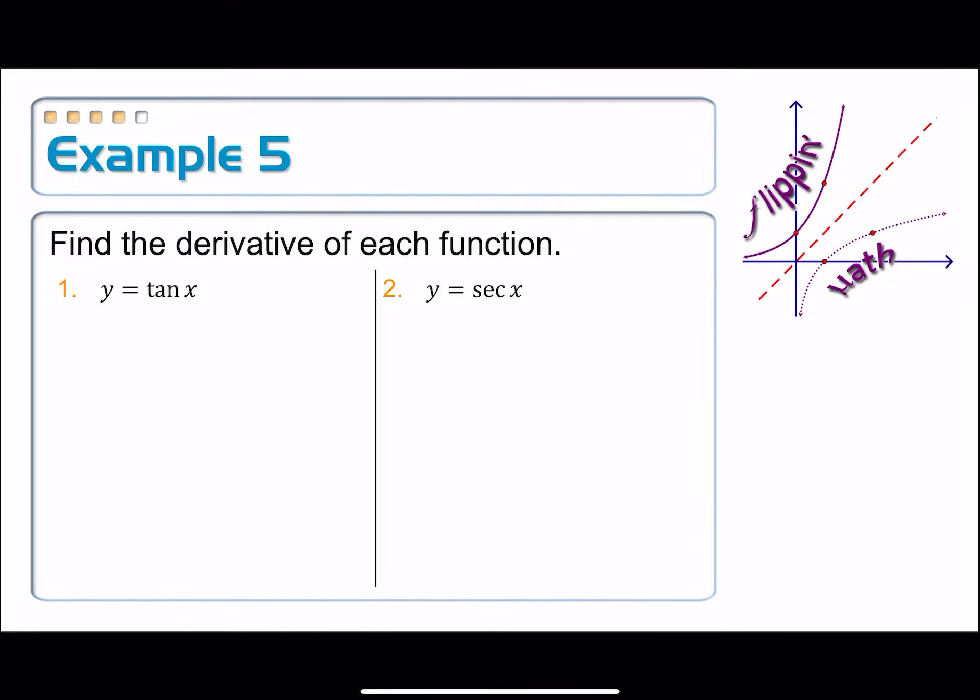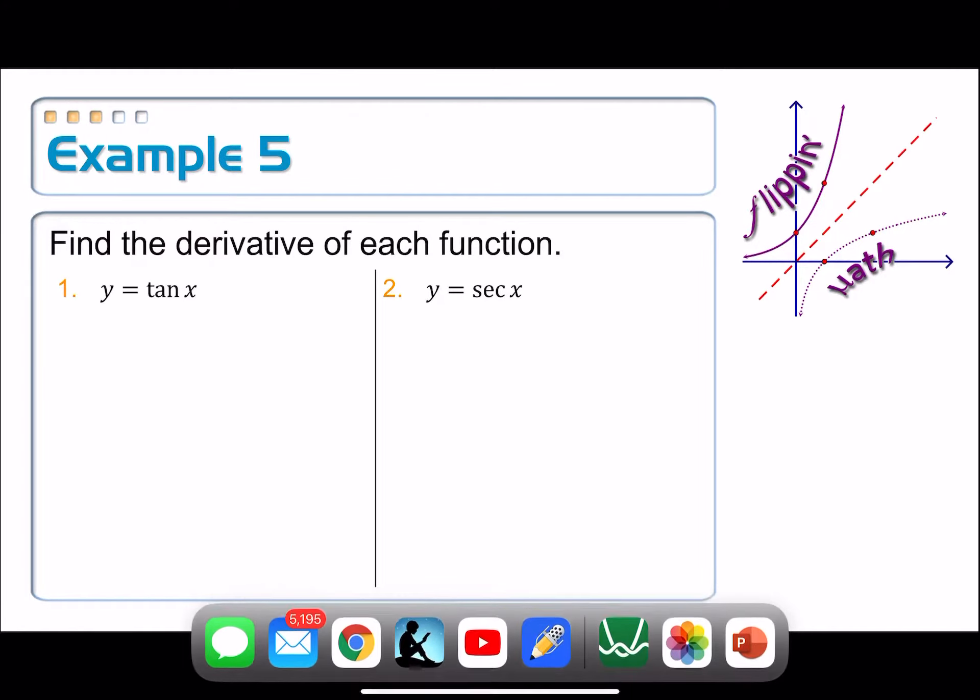We're not going to use the limit definition of the derivative. You remember how math works - once you've proven something, then you can use that something to prove something else. That's the axiomatic system of math. And that's exactly what we're going to use on tangent and secant. We got the easy ones out of the way, sine and cosine, using the limit definition. These would be pretty brutal that way, if you could do it at all. There's a challenge for you.